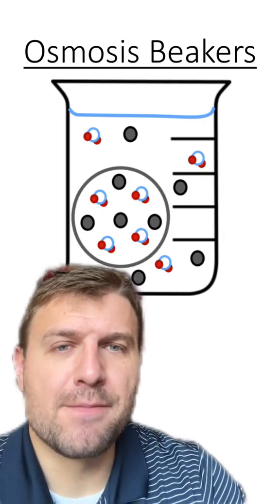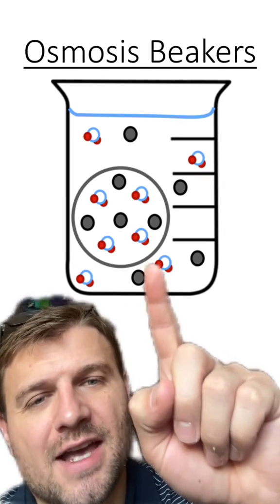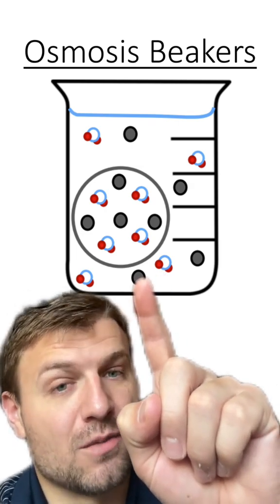Does this diagram show a hypertonic, hypotonic, or isotonic solution? You can see we have a beaker here with a cell inside. These molecules represent water molecules, while these circles represent solute molecules.